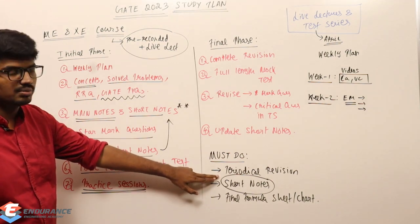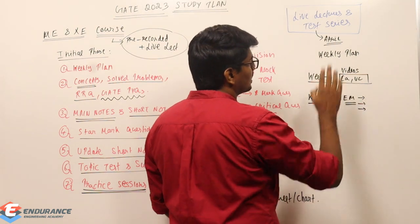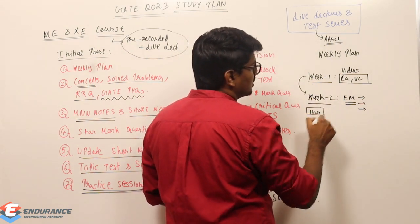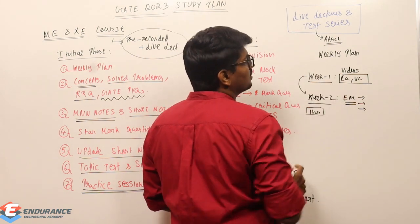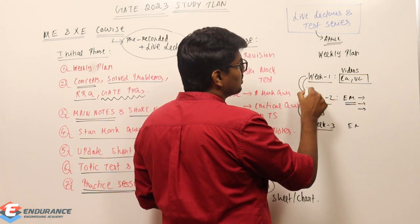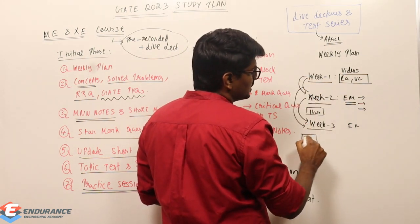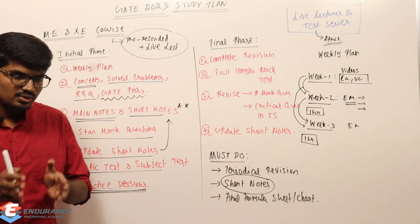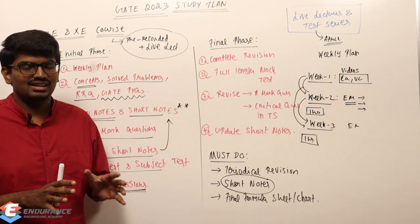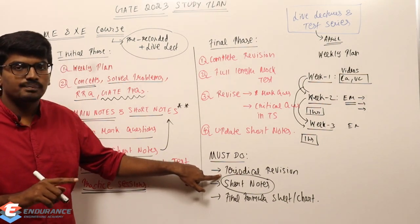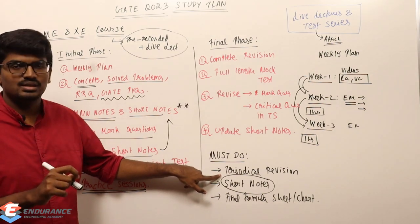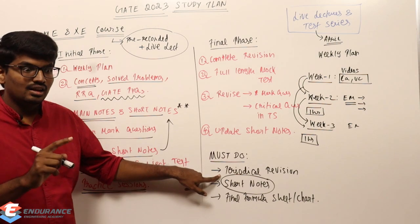Periodical revision is very important. For example, you completed calculus and vector calculus in week one and you start engineering mechanics in week two — whatever you completed in week one must be revised. Invest one hour daily for the topics completed in earlier weeks. As you move to week three, revise week one and week two topics too. As you proceed each week, revise all earlier completed topics — this is a key point.